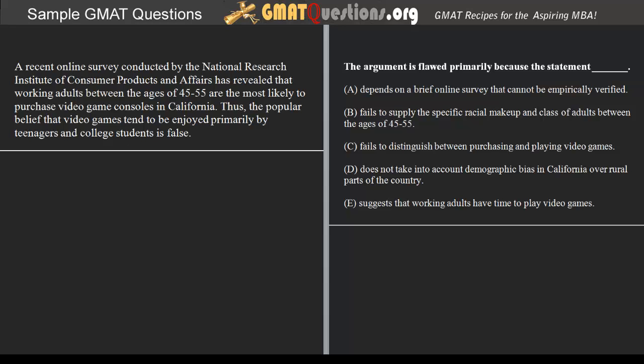So as we can see, we're being asked to provide an answer choice that would reveal the logical flaw upon which the argument being made in the passage is based. Because we're being asked to reveal a flaw, thereby weakening the efficacy of the argument, we know we're dealing with an argument evaluation type question — because we're being asked to weaken the claim or argument being made.